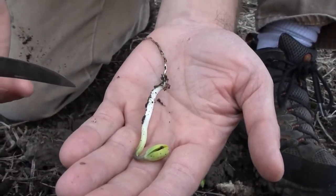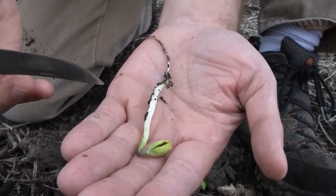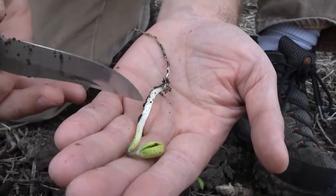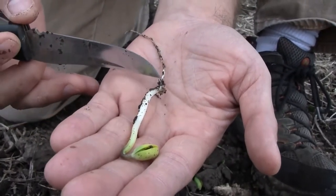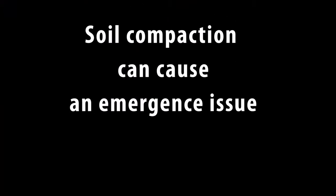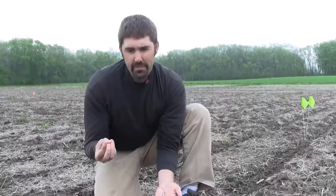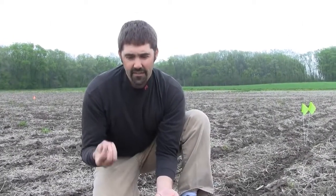In a no-till situation like we're in right now, this would probably be a little bit deep in terms of seeding depth. Another common issue related to soybean emergence problems occurs specifically in a conventional field when we start seeing compaction as an issue.